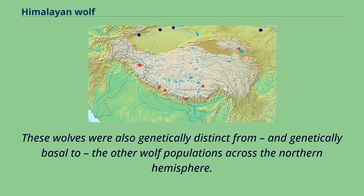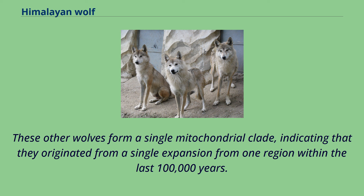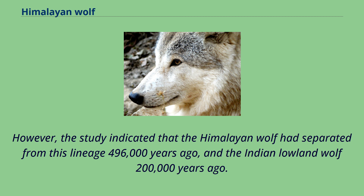These other wolves form a single mitochondrial clade, indicating that they originated from a single expansion from one region within the last 100,000 years. However, the study indicated that the Himalayan wolf had separated from this lineage 496,000 years ago, and the Indian lowland wolf 200,000 years ago.